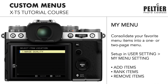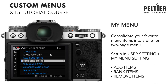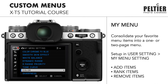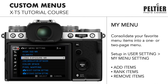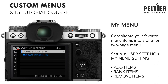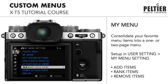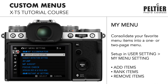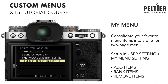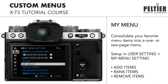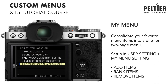When you press OK, you'll be taken to a screen that shows what your My Menu currently looks like. You can reorder the items using the joystick up or down, making settings you change most often appear towards the top and less used options towards the bottom. Just repeat this process for all the settings you want to add until you are complete, then press the back button to finish the setup.